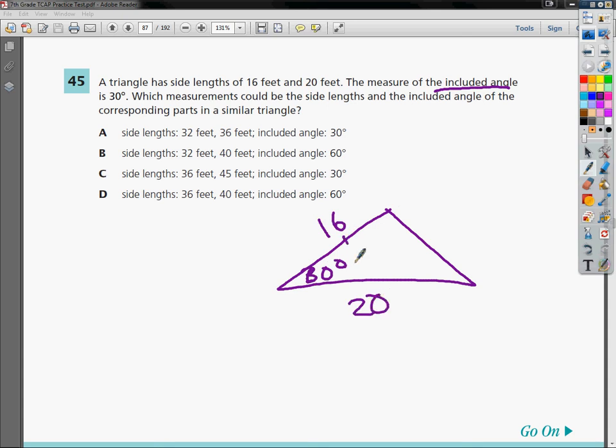This is the angle that matters. If they give me a different angle and it's not between the two sides, then I can't say anything about similarity anyway. It has to be the included angle. Which measurements could be the side lengths and the included angle of the corresponding parts in a similar triangle?